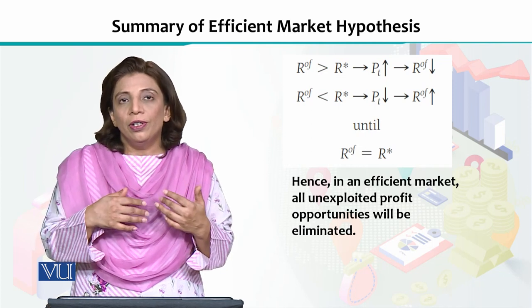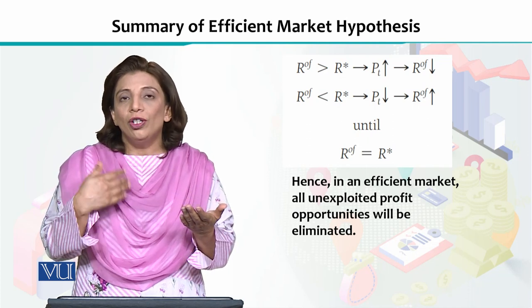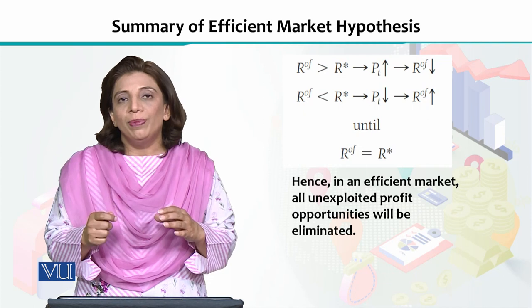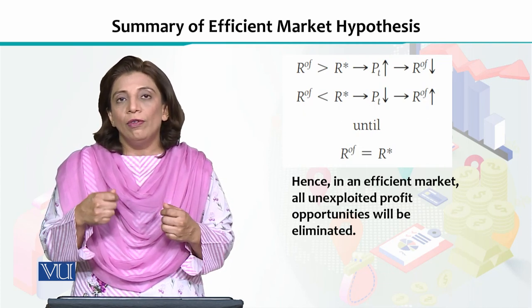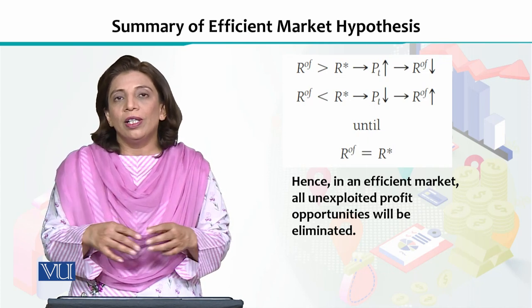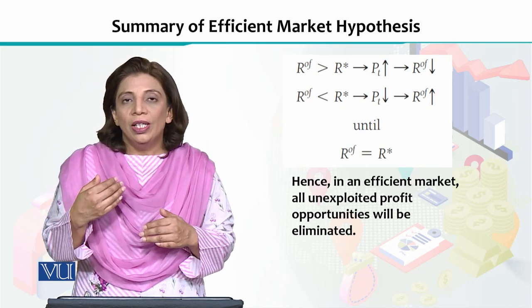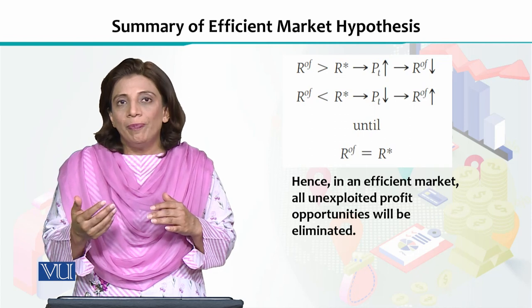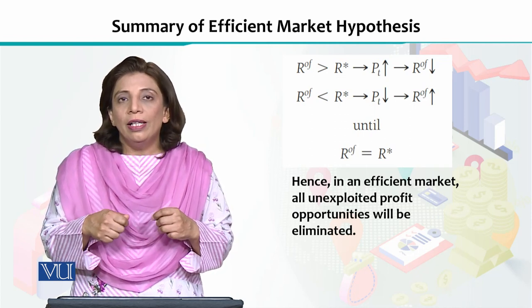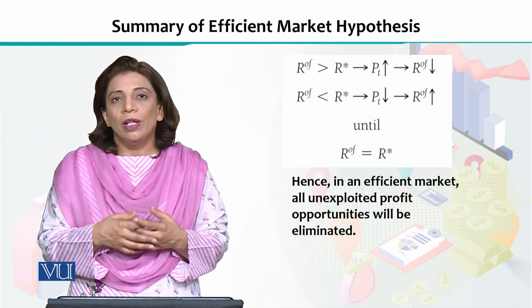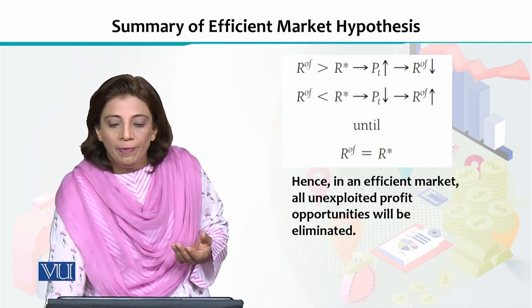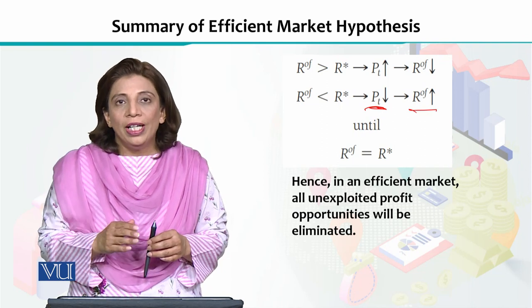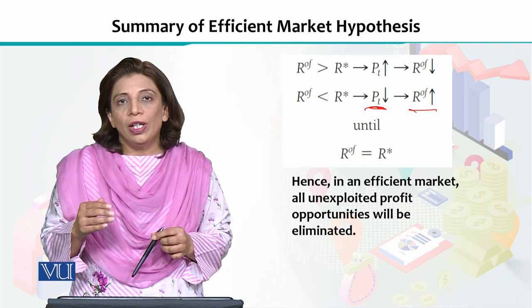Similarly, if the optimal forecasted return of a certain stock is assumed to be lower — meaning the return will be lower in the future — and the equilibrium return estimated is 10%, but the current market situation shows that the particular stock is not performing well and the return will decline, this will cause panic among investors holding that stock and they will start selling. When there is excess supply in the market, the price of that stock will decline, as seen by the arrowhead. Since the price will fall, as discussed in the formula, our optimal forecasted return will go up.